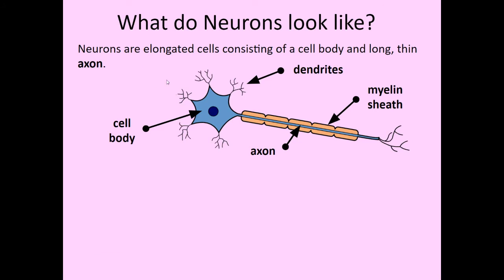Neurons are elongated cells, which means they're kind of stretched out. They consist of the cell body, which does most of the functions of a normal cell. You've got cytoplasm here, which actually runs all the way to the end of what's called the axon. We've got the nucleus in the middle — the nucleus is still the control center of the cell. It still has all the DNA, chromosomes, and makes all the proteins. The cytoplasm is the site of most chemical reactions.